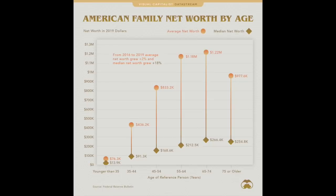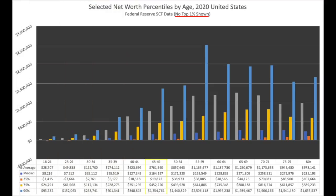We're going deeper — press pause if you want to study your age range and the data further. What we are looking at here is select net worth by age in year 2020 in the USA; data is provided by our private central bank. We have our 45 to 54 year old bracket highlighted, and the 75th percentile of that group — what I would define as middle class — currently has about $450,000 in net worth. Most of that net worth is likely caught up in their home's equity, and that is generally where most Americans have their wealth.